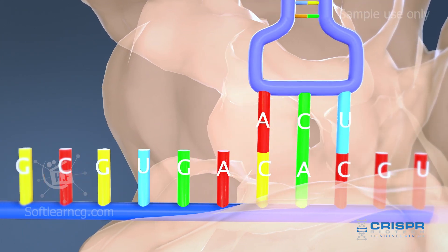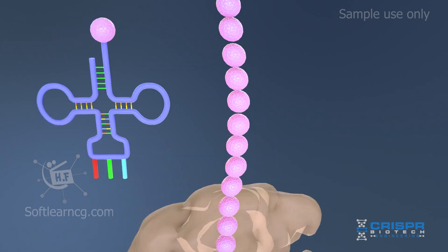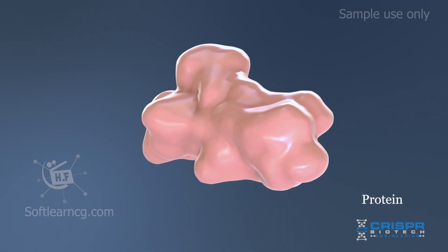Each triplet is read and a transfer RNA delivers the corresponding amino acid that is added to the chain until it is completed and folds to become the protein.